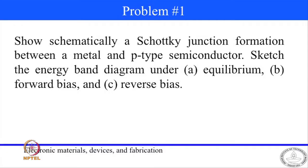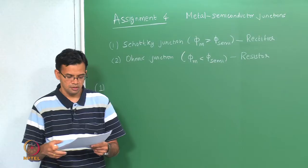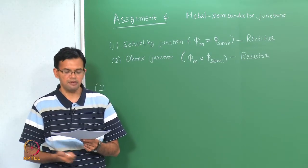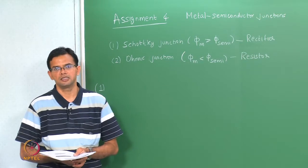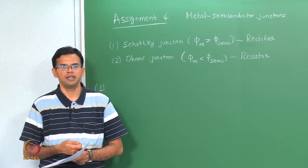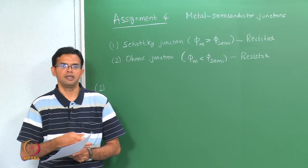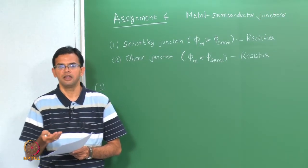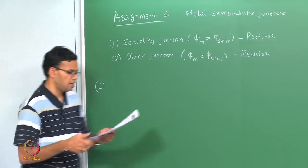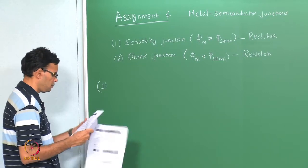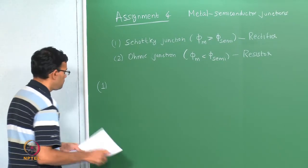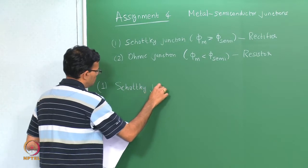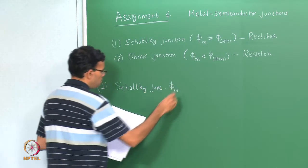We want to show how a Schottky junction is formed between a metal and a p-type semiconductor. We can do this by sketching the band diagram under equilibrium, forward, and reverse bias. In class, when we looked at the example of a Schottky junction, we looked at a metal and an N-type semiconductor. We said a Schottky junction is formed when phi_m is greater than phi_semi.